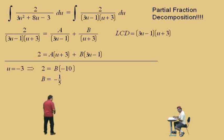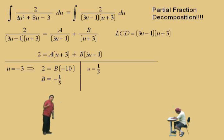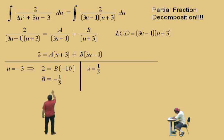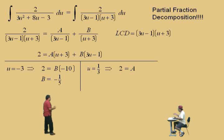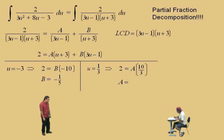We're not done yet — we've got to find the A value. To get A, we have to eliminate B. B multiplies 3u minus 1, so we choose u equal to one-third, because 3 times one-third is 1, and 1 minus 1 is 0. Plugging in, the left-hand side gives 2 equals A times (one-third plus 3). One-third plus 3 is ten-thirds. Solving for A: 2 divided by ten-thirds gives six-tenths, which reduces to three-fifths.